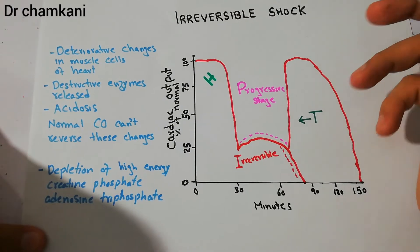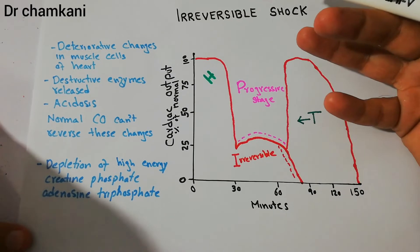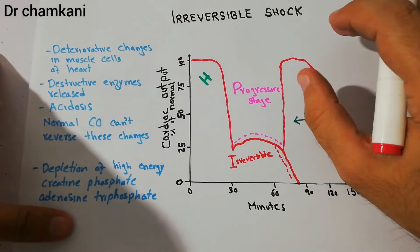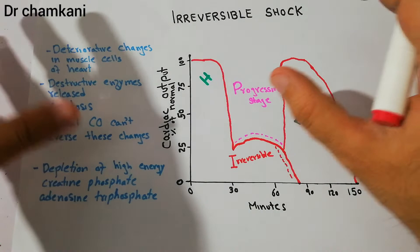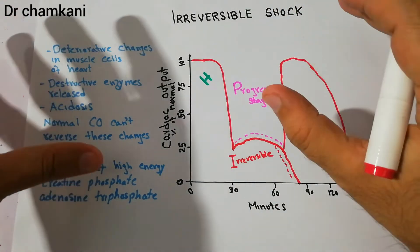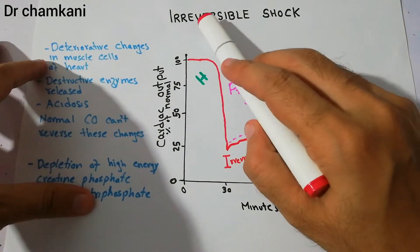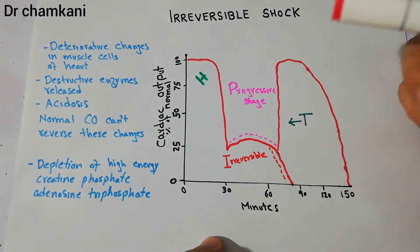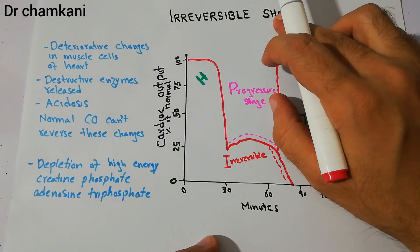The first stage, the non-progressive shock, was a stage in which the body's own reflexes or compensatory mechanisms could reverse the shock and the patient could recover. In the progressive stage the shock was progressing, and any external help or treatment would reverse the shock. But once the irreversible stage has been reached, even external help or treatment provided cannot reverse the shock.